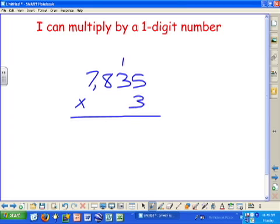5 times 3 is 15. 3 times 3 is 9, plus 1 is 10. 8 times 3 is 24, plus 1 is 25. 7 times 3 is 21, plus 2 is 23.